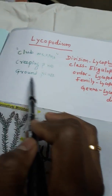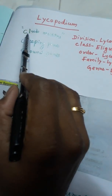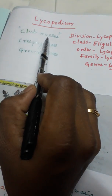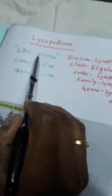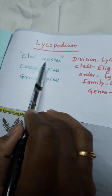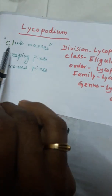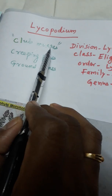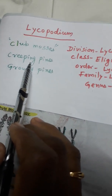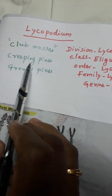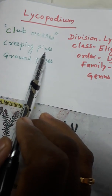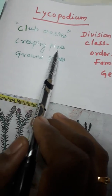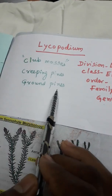This plant resembles Bryophyta moss plants, that's why it is called club mosses. The plant has strobilus-like sporophylls and looks like pine plants with cone-like structures, hence it is called creeping pine or ground pine.